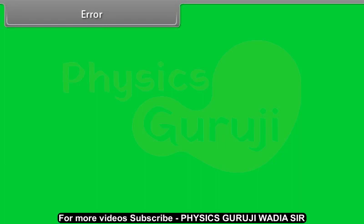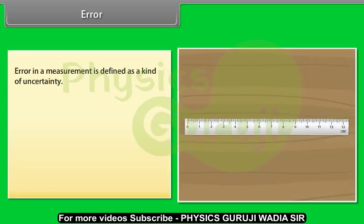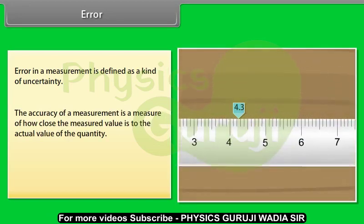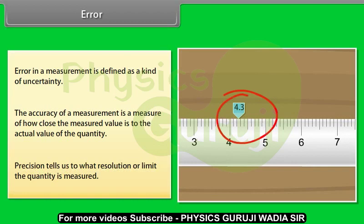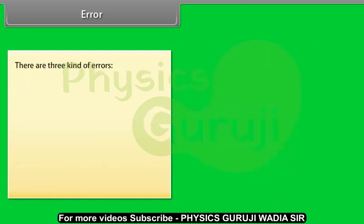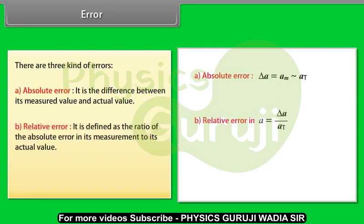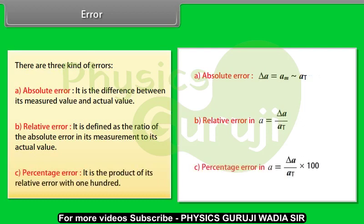Error: The result of every measurement by any measuring instrument contains some uncertainty. Error in a measurement is defined as a kind of uncertainty. The accuracy of a measurement is a measure of how close the measured value is to the actual value of the quantity. Precision tells us to what resolution or limit the quantity is measured. There are three kinds of errors: Number 1, Absolute error - it is the difference between its measured value and actual value. Number 2, Relative error - it is defined as the ratio of the absolute error in its measurement to its actual value. Number 3, Percentage error - it is the product of its relative error with 100.